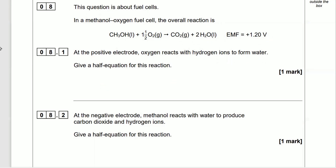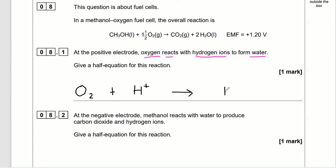I always recommend you underline or highlight the key information. We've been given oxygen, hydrogen ions, and water — so just write that out as an equation. Make sure you leave a bit of space either side for balancing and adding electrons. So we've got oxygen and hydrogen ions, an arrow in the middle, and then that forms H₂O.